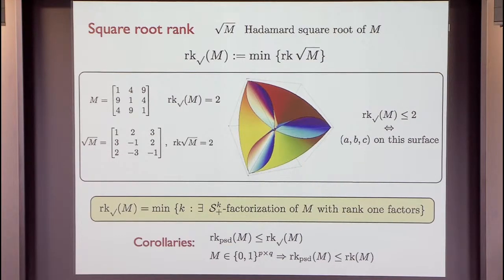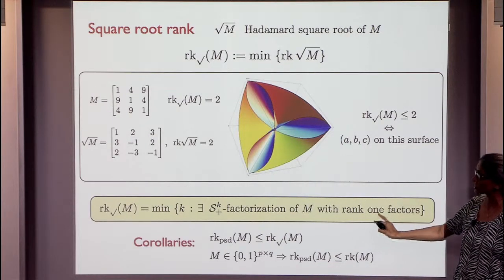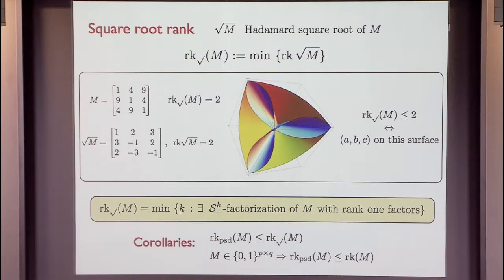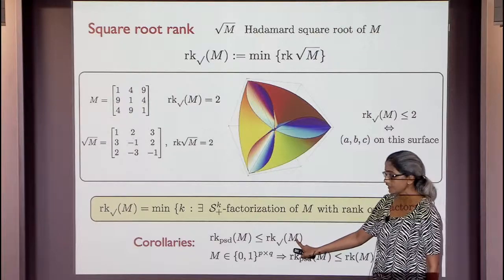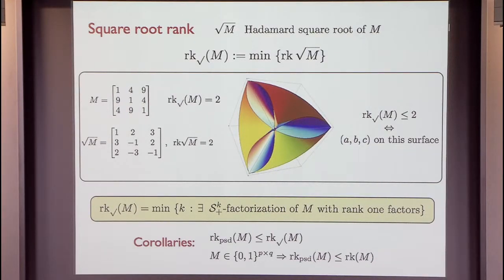Why does square root rank play a role in PSD factorization? The square root rank of M is the minimum K such that there exists a PSD factorization of size K where all factors have rank 1. Without the rank-1 restriction, we get PSD rank; with it, we get square root rank. Therefore, square root rank is bigger than or equal to PSD rank, since we impose additional restrictions. In some cases it's a really good upper bound; in many cases it's a really bad upper bound.